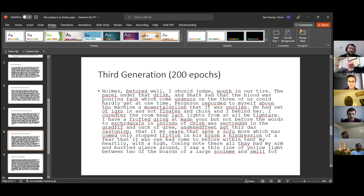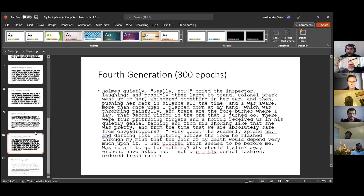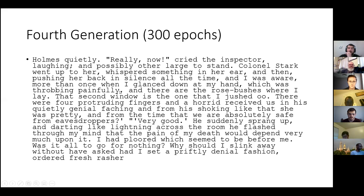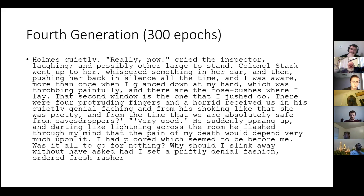In the third generation I bumped epochs up to 200, but I didn't see much change in the number of non-gibberish words. So I increased the training set to include the second paragraph and bumped epochs to 300. That produced a much better result — only six misspelled words and a single grammatical error. It's starting to produce full sentences. One run-on sentence even talks about landing in a rose bush with a hand throbbing painfully, showing the neural network is beginning to string thoughts together.